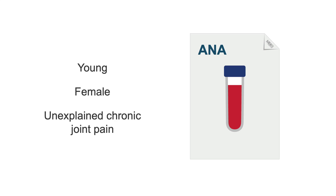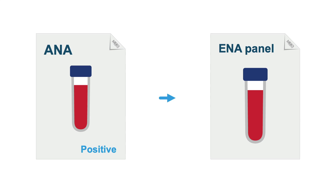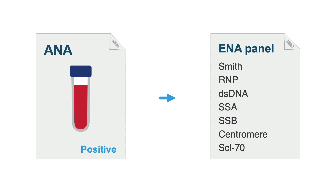If the ANA is positive, an ANA or extractable nuclear antigen panel should be ordered next. This panel detects autoantibodies in the blood and includes the following antibodies: Smith, ribonucleoprotein or RNP, double-stranded DNA or dsDNA, SSA, SSB, Centromere, and topoisomerase-1, also known as SCL70 antibodies.